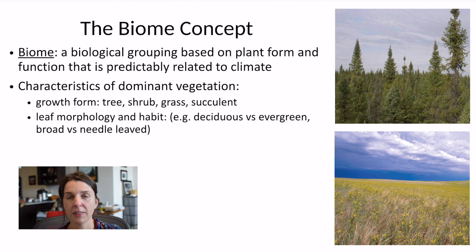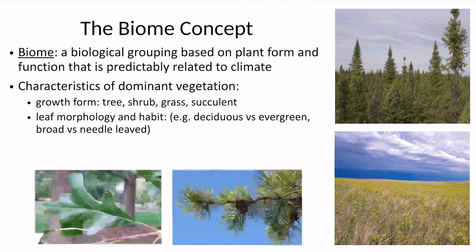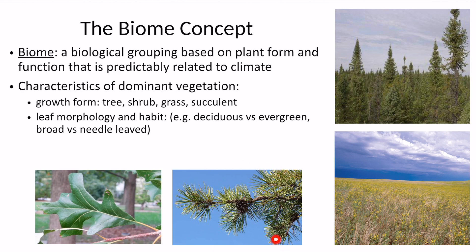Another characteristic related to climate is a plant's leaf morphology or leaf habit. An example of this is whether the leaves are deciduous or evergreen — does the plant keep its leaves all year round, or does it drop them for part of the year? We have examples of both leaf habits in Arkansas. Here at the bottom of your screen to the left, you can see an oak leaf. Oak trees, at least in Arkansas, are deciduous — they drop their leaves in the winter, whereas this pine is evergreen and holds its needles all year round. Leaf morphology can also differ with climate, showing the difference between a broad leaf like this oak and a needle-leaved plant like this pine.